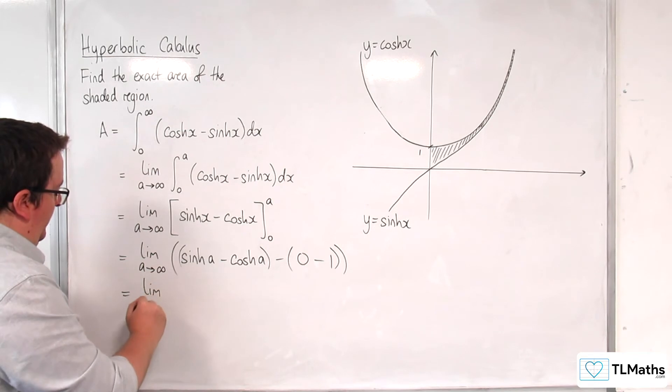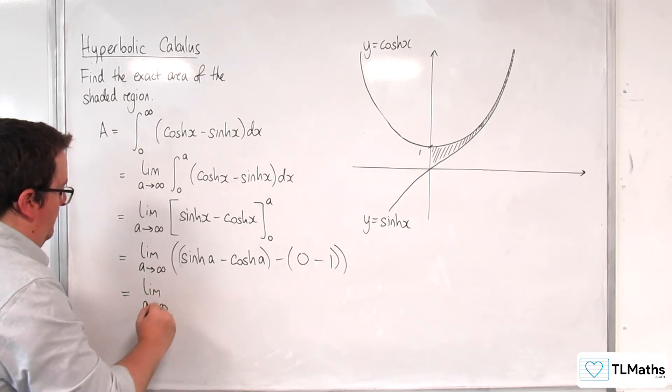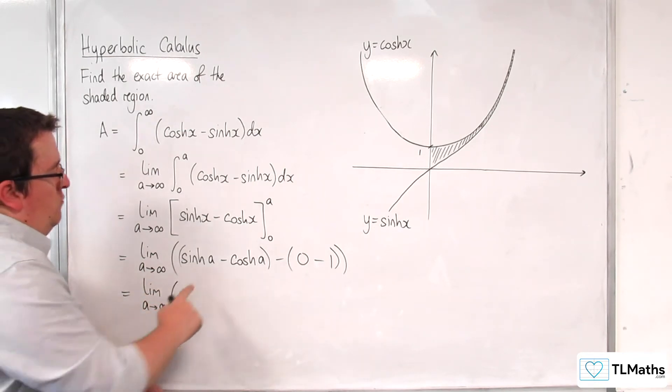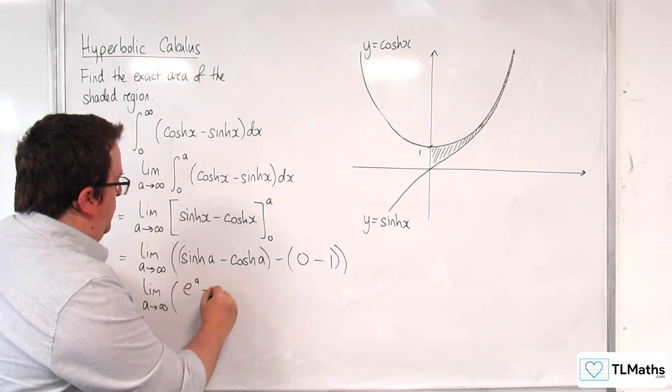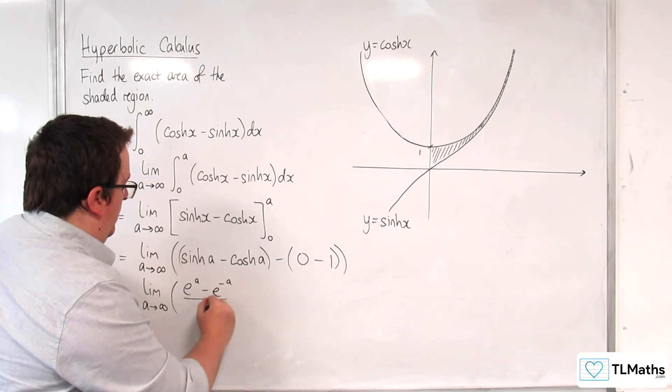So we have the limit as a tends to infinity of, now sinh of a, I'm going to need to write that as e to the a take away e to the minus a over 2.